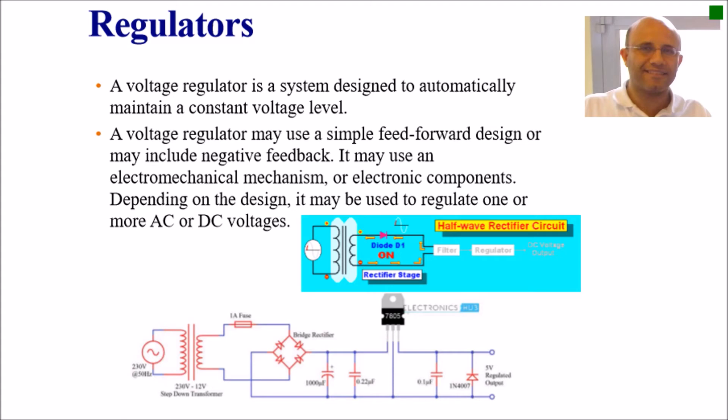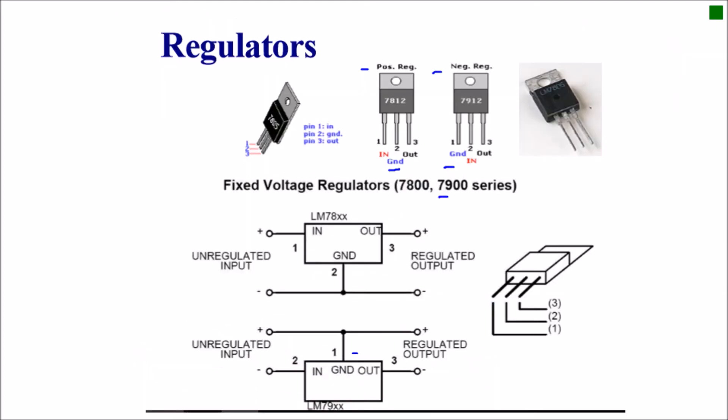A voltage regulator is a system designed to automatically maintain a constant voltage level. The voltage regulator may use a simple feed-forward design or may include negative feedback. It may use an electromechanical mechanism or electronic component. Depending on the design, it may be used to regulate one or more AC or DC voltages.